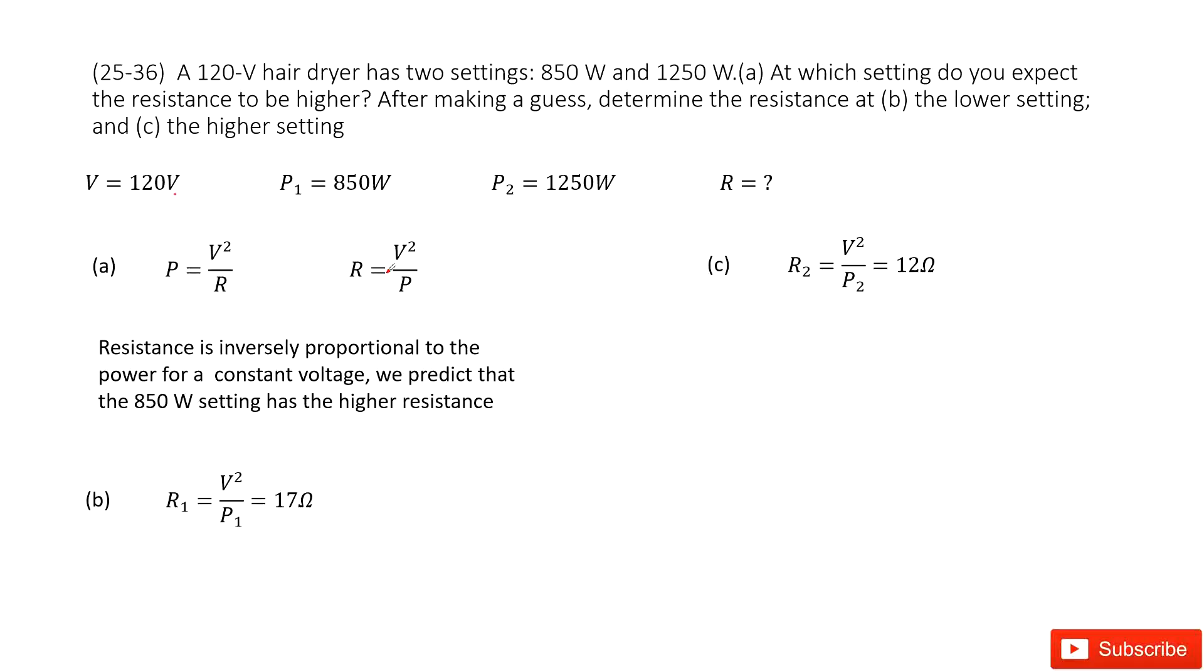So that means the higher the power, the smaller the resistance. In this case, we can say P1 is smaller than P2. So the smaller the power, the higher resistance.